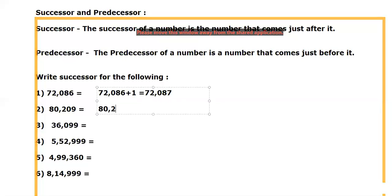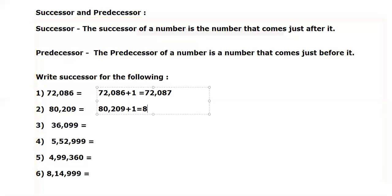In the same way, we'll write 80,209 plus one. After nine, what will come? Ten, right. So ten is a two-digit number, means you have to go for 210.